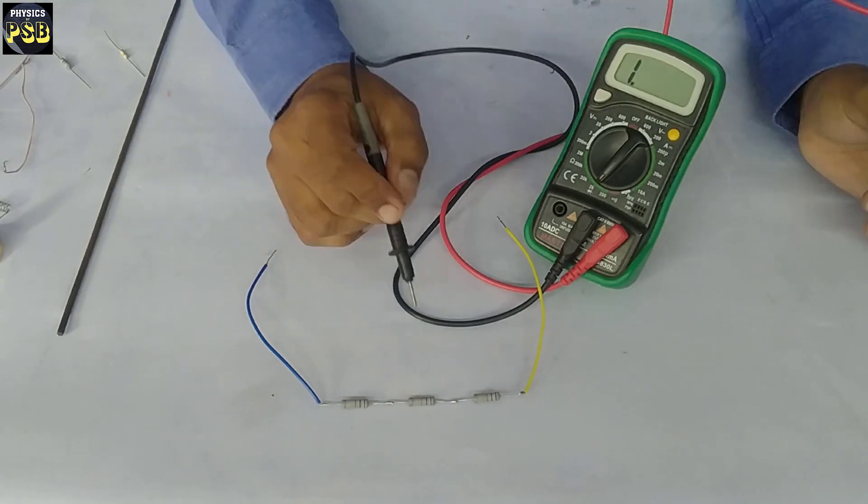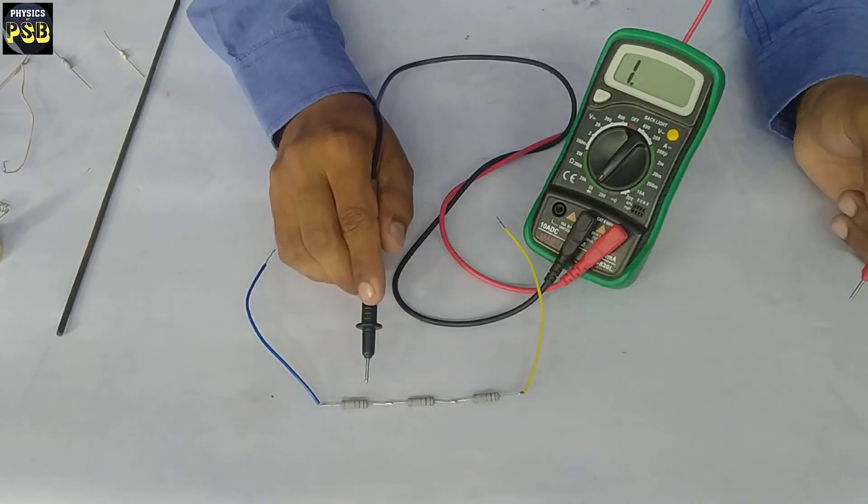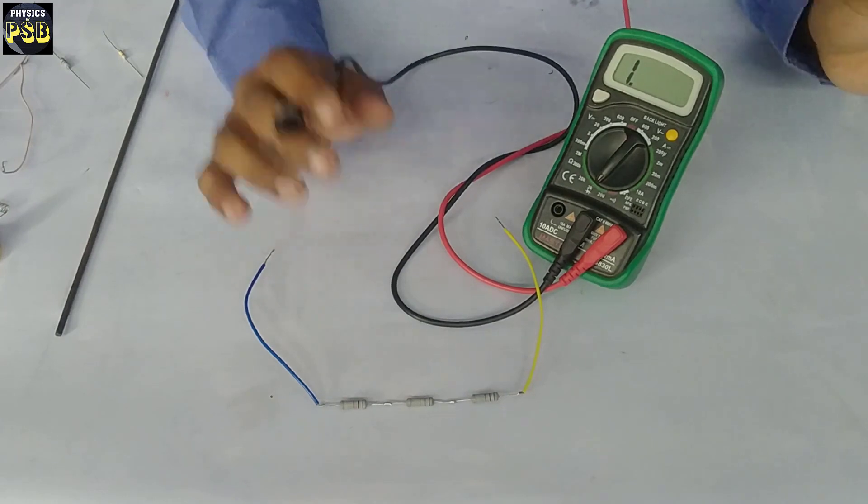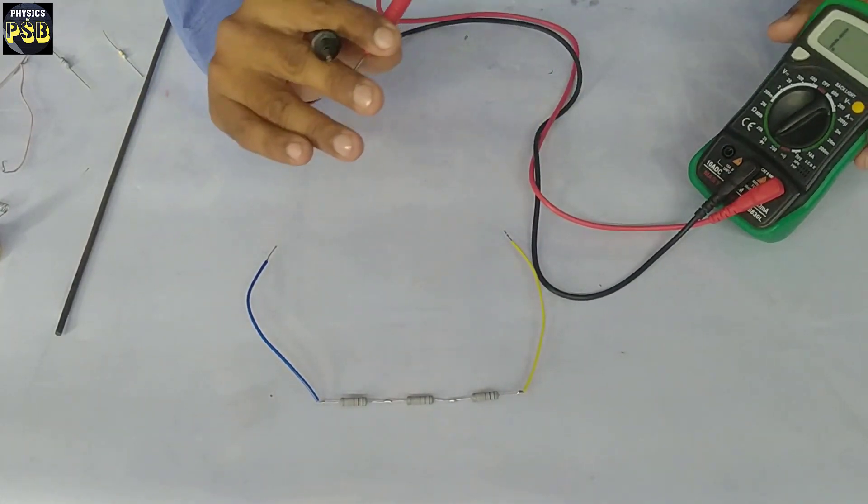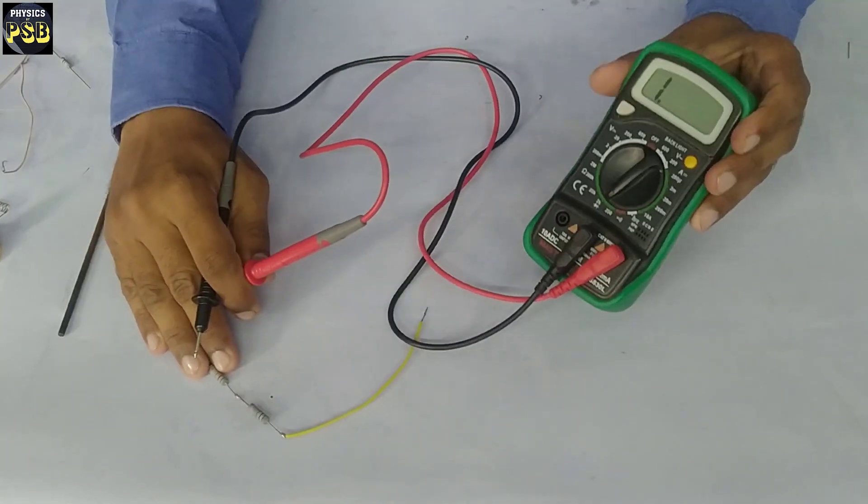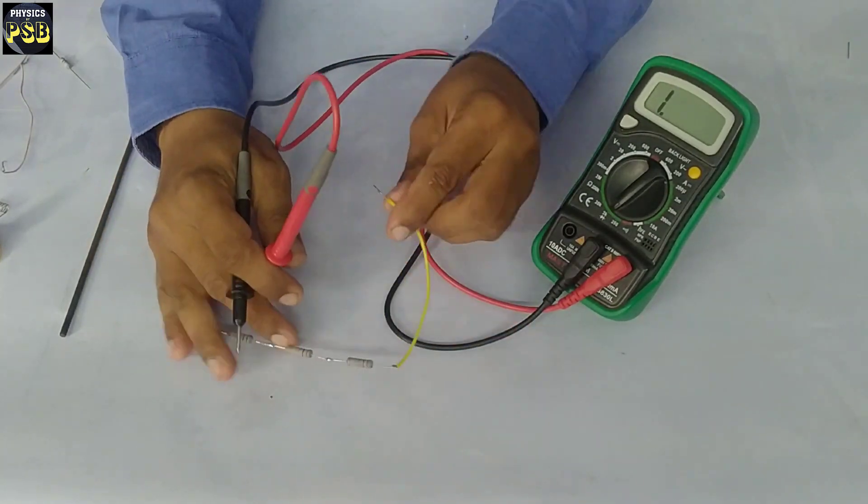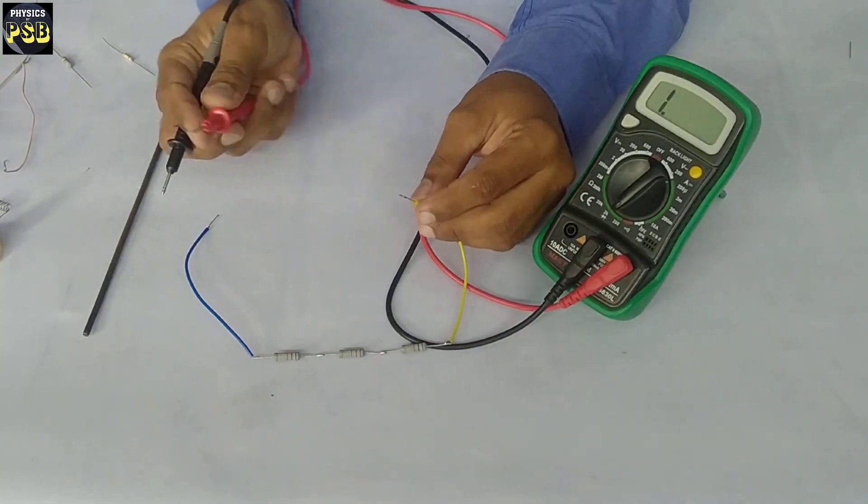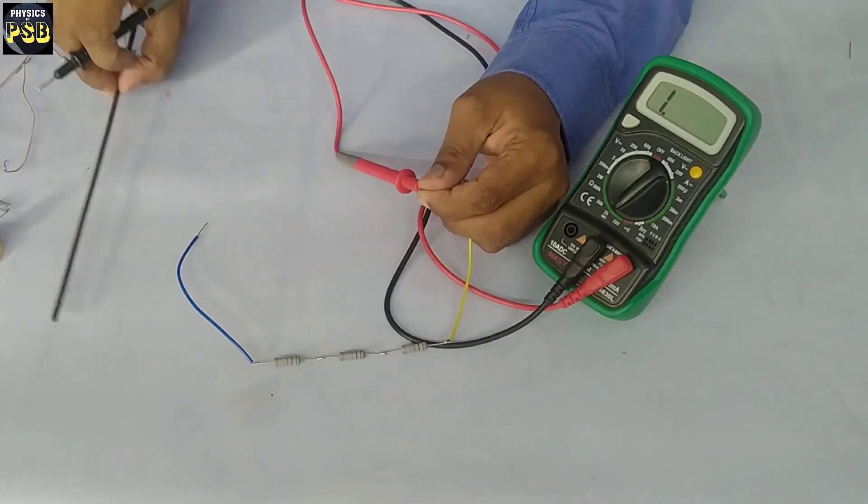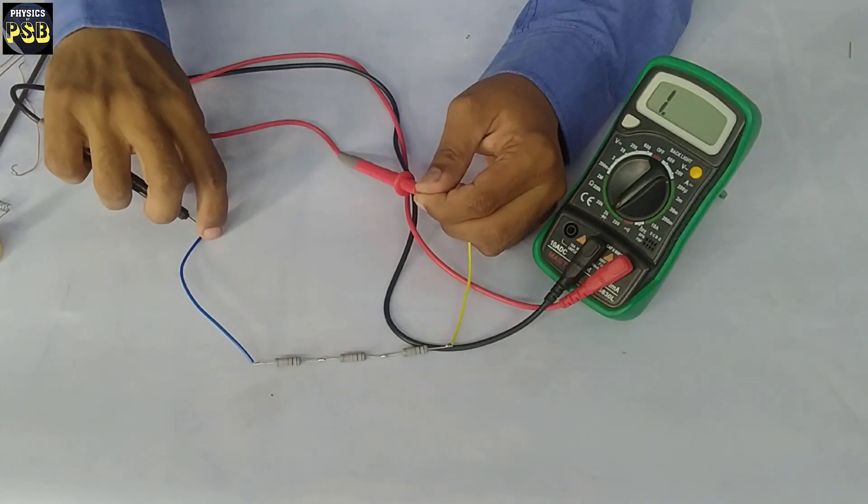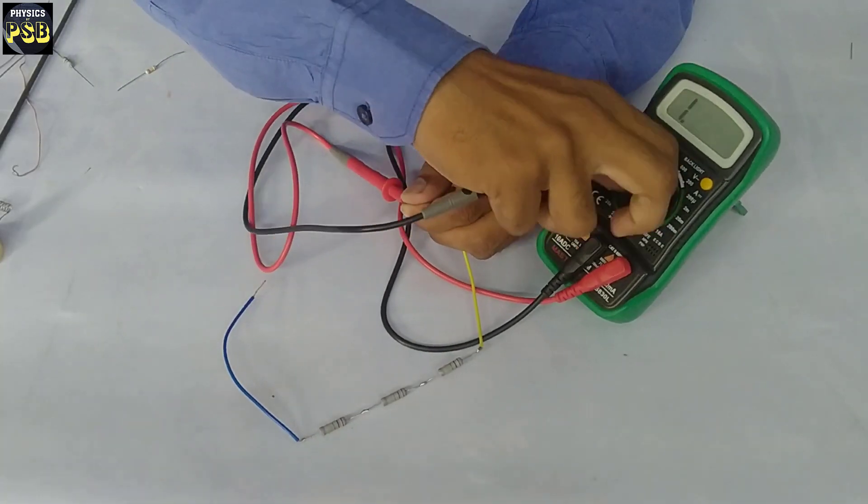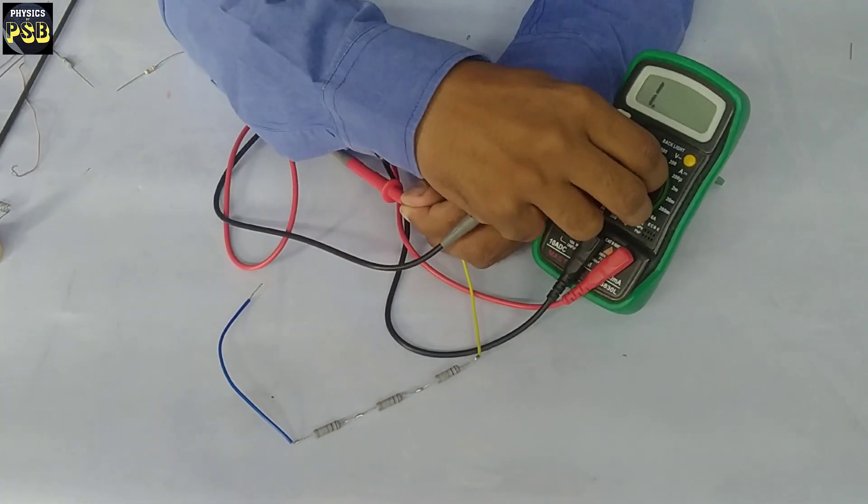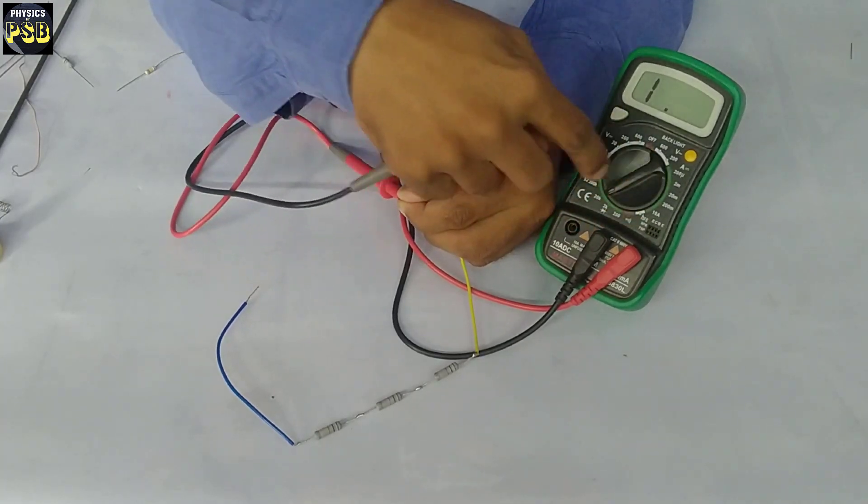Now I have soldered them in this manner. They are in series. Let me check the total resistance. I will keep one probe here and another probe is placed here. The resistance is more than 3 kilo-ohm, so I turn the knob.